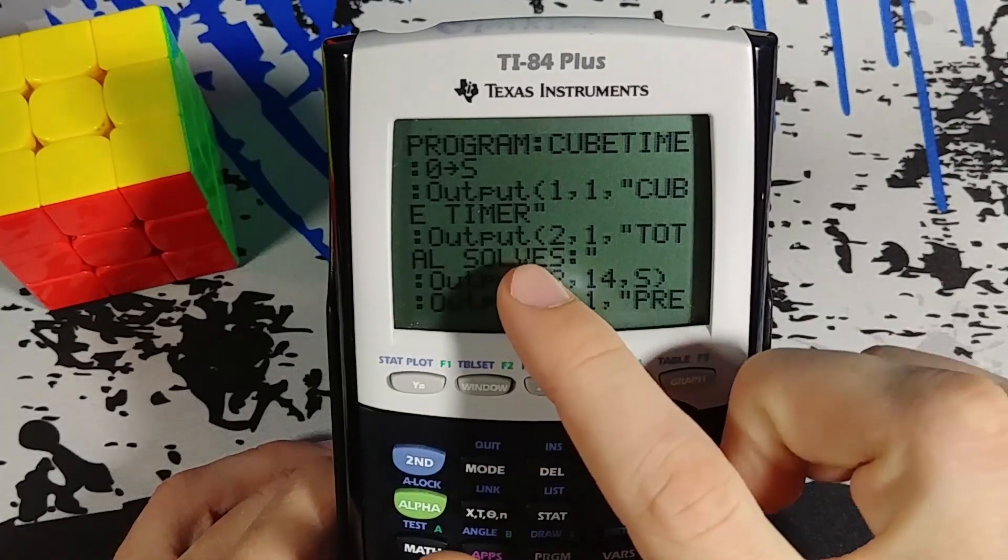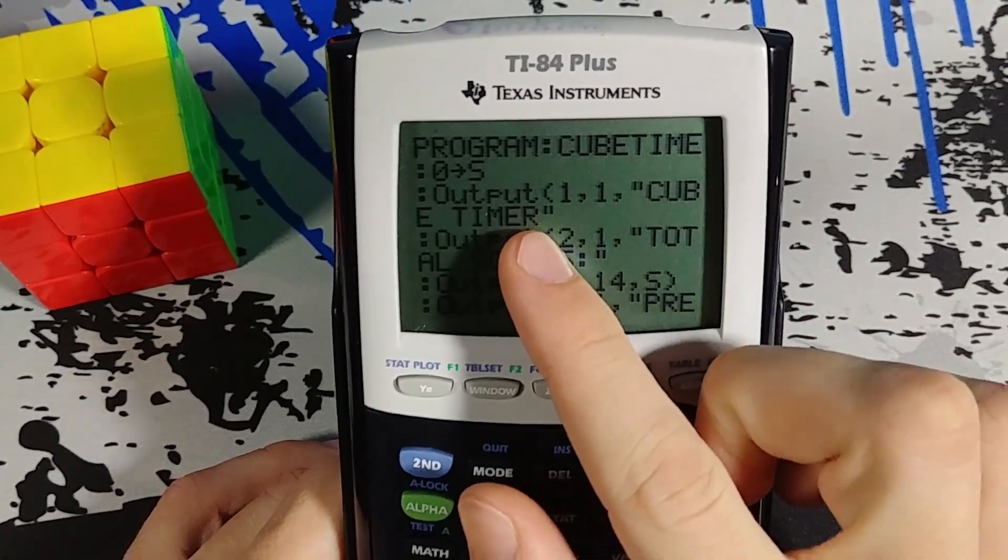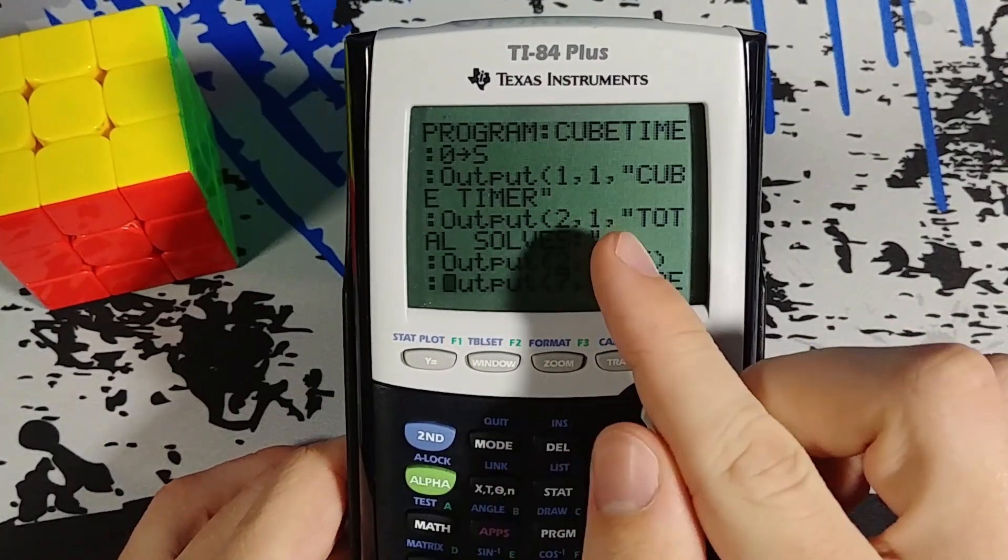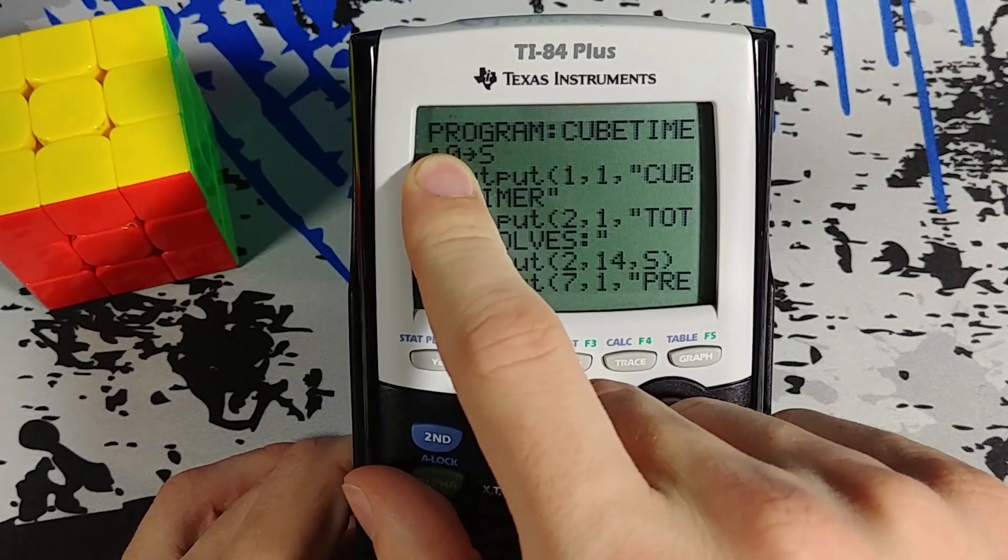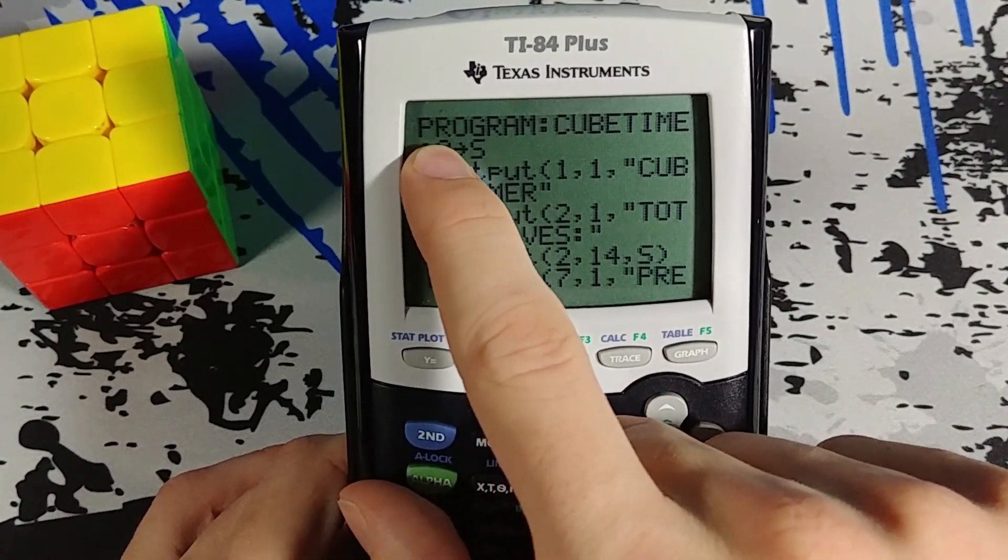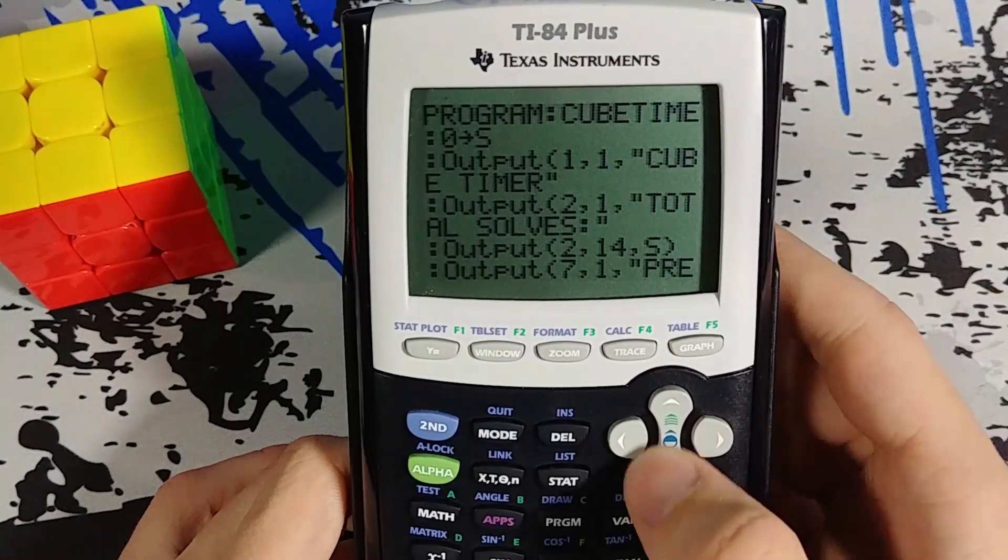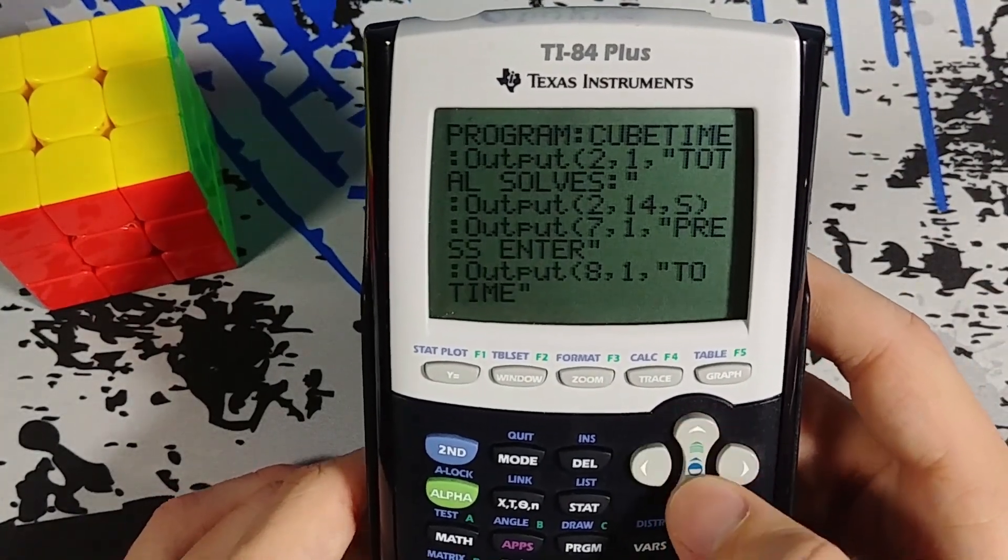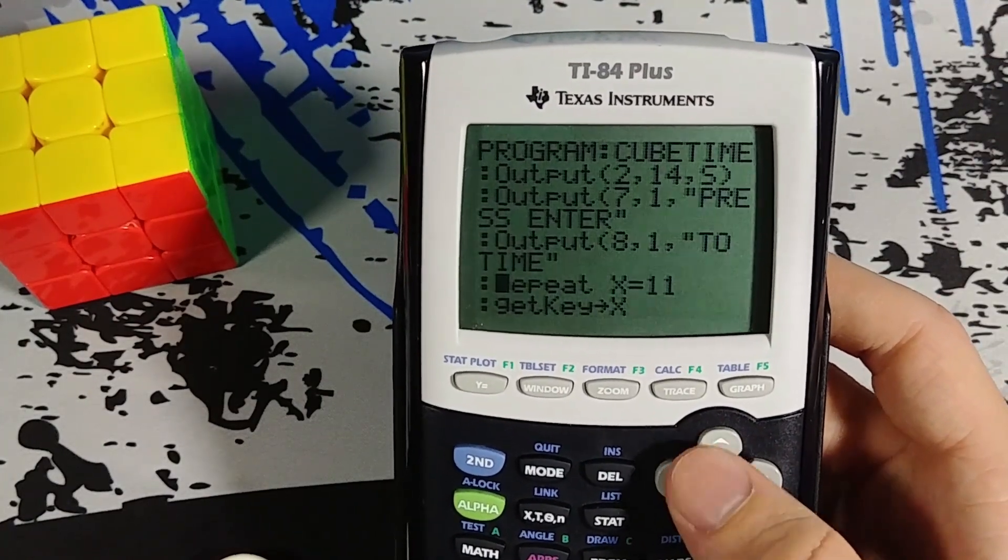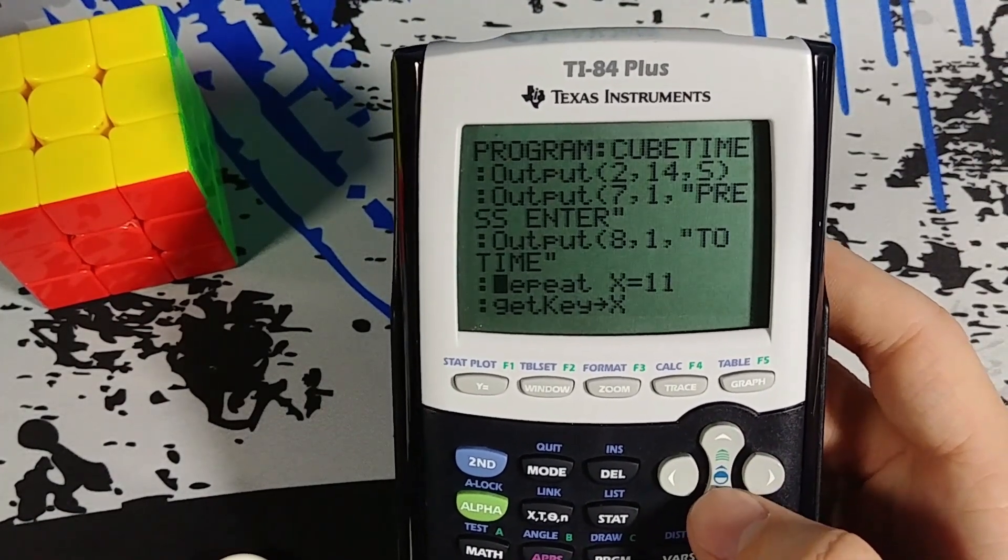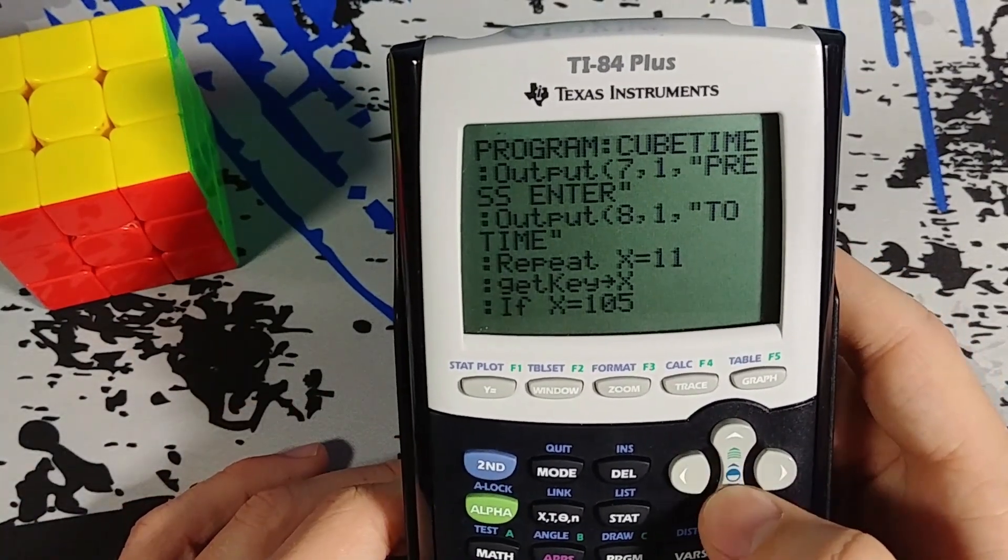So here I have my titles and everything. The output function allows me to put out text at a certain position, row and column. So 1,1 is the corner here. 2,1 is right below it. 2,14 is fourteen characters over. And that's my number of solves I've done. Press enter to time. Those are at the bottom. And here we're going to start a very large repeating function. It's like the overarching repeating function.